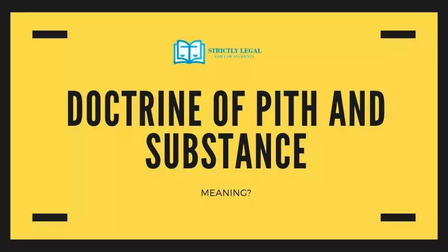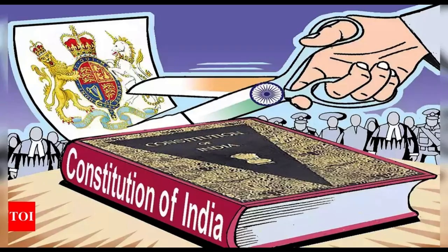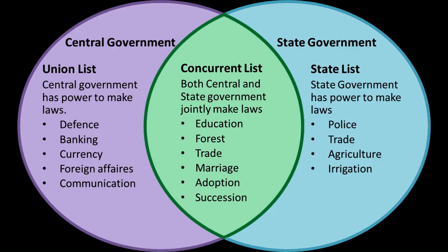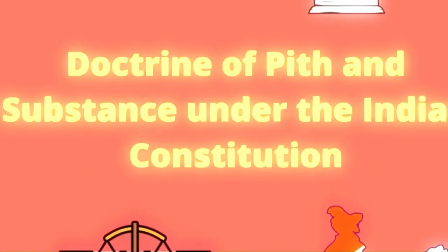To put it in simple words, the doctrine of pith and substance holds that laws may overlap but shall not become null and void on the ground of overlapping, and the same shall be valid by invoking the doctrine of pith and substance.